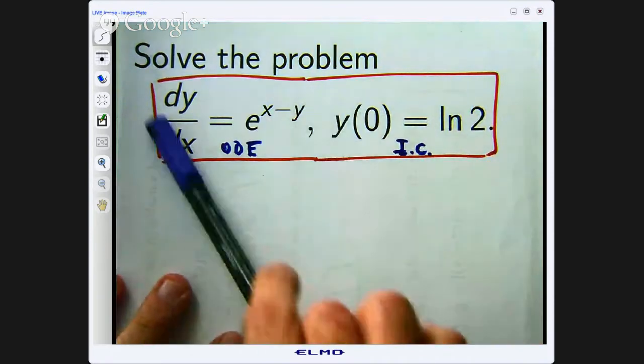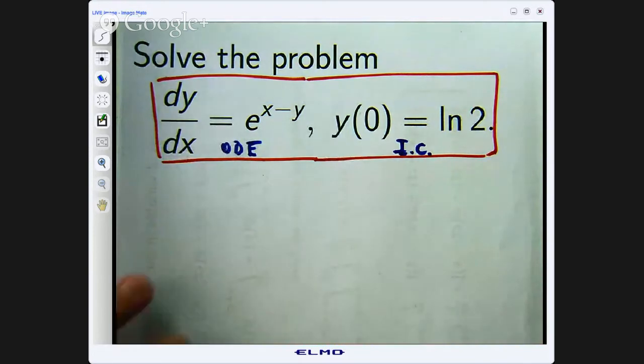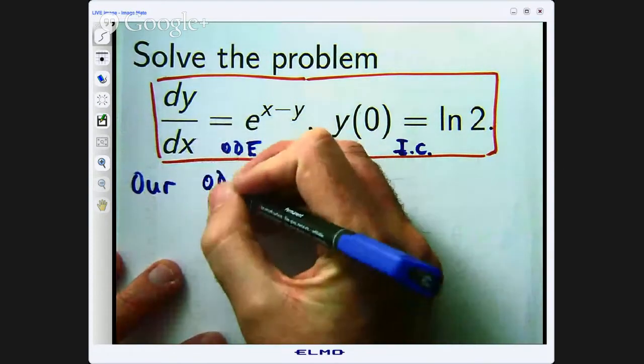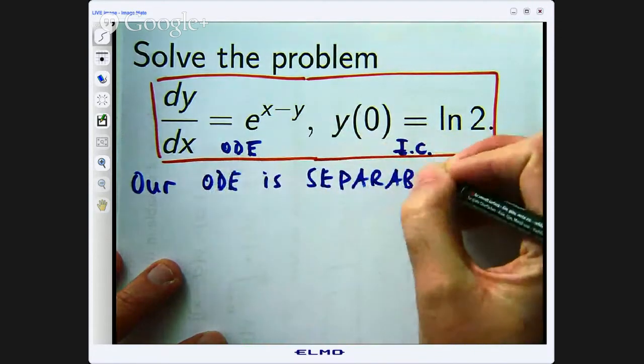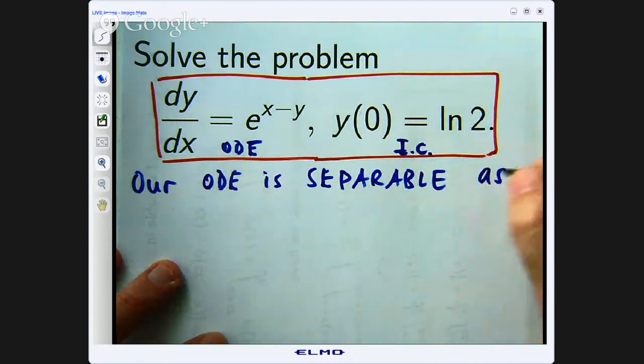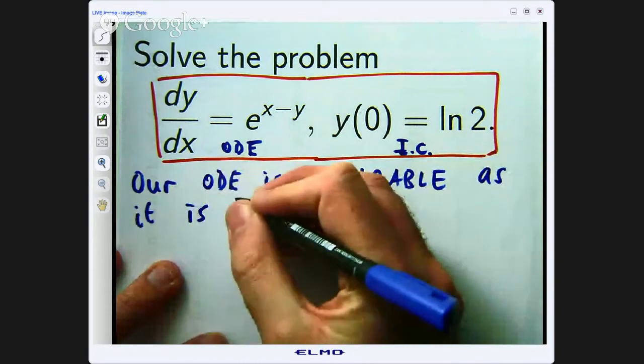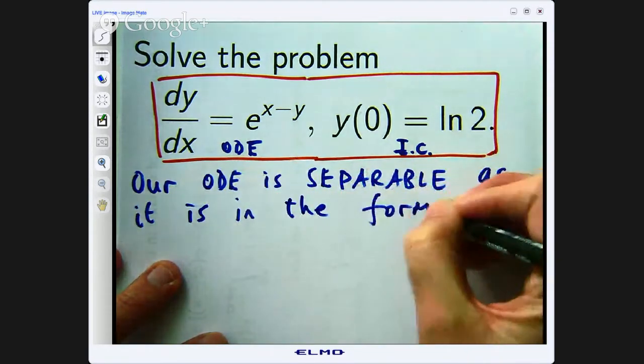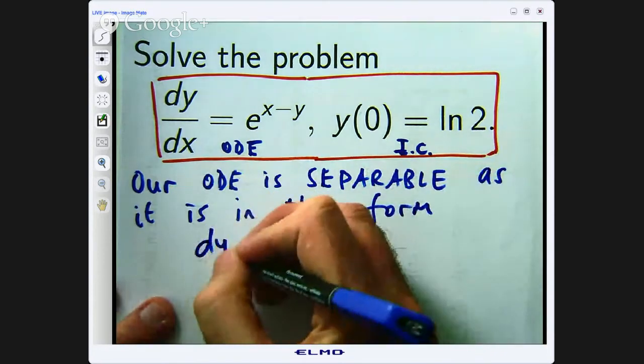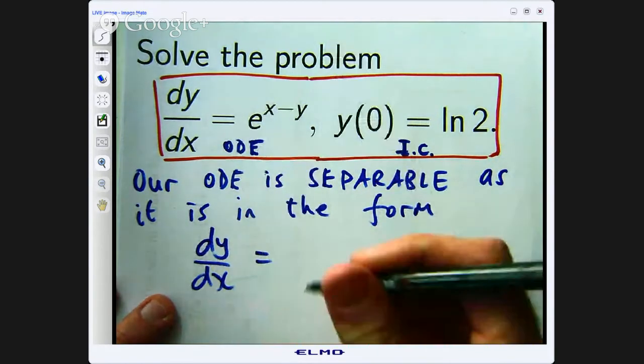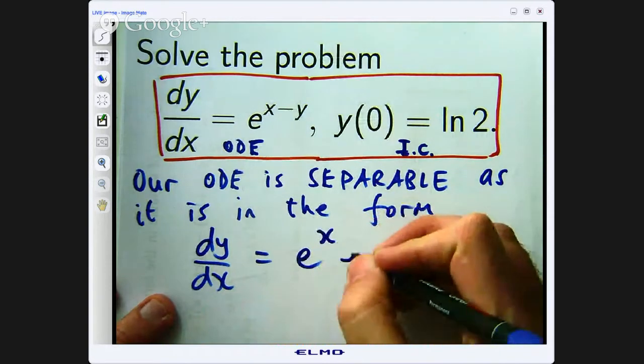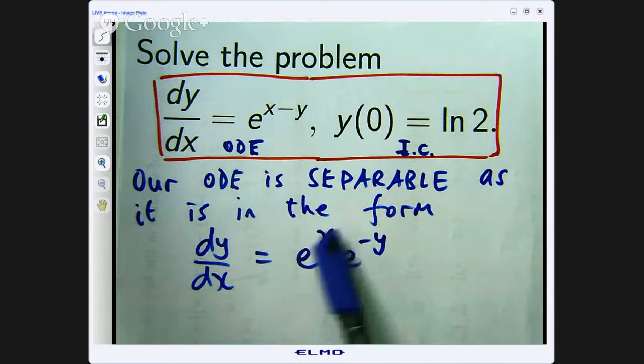Now this kind of problem can be slightly manipulated to put it in what is known as a separable form. So our ODE is what is known as separable as it is in the following form. A separable differential equation is in the following form. So e to the x minus y, well I can use my index laws to write it like this. So now the right-hand side here is a function of x times a function of y.